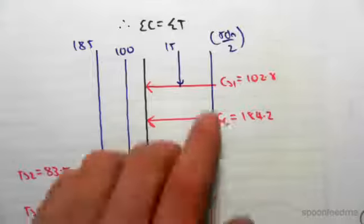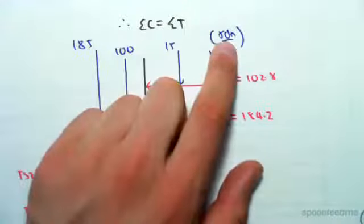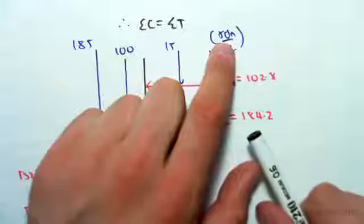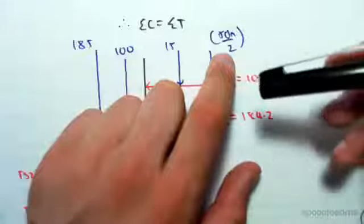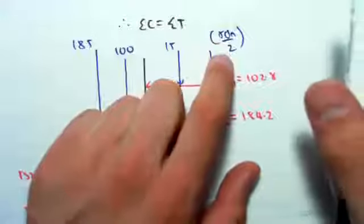We've seen that the depth of the rectangular stress block is gamma dn, and the force will act halfway from the middle of that. So halfway in the stress block. So it's just going to be gamma dn on two.